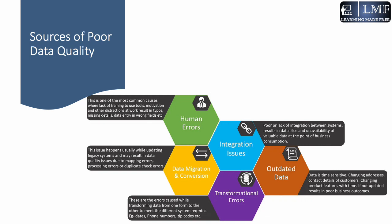Another source is integration issues. Sometimes there are issues around integration between two systems and various supply chain sources of data. This results in data silos and unavailability of valuable data at the point of business consumption — data exists in the source system but is not flowing correctly into the consuming system.